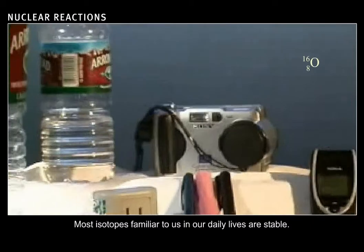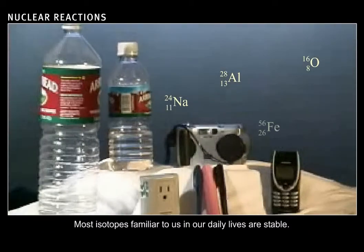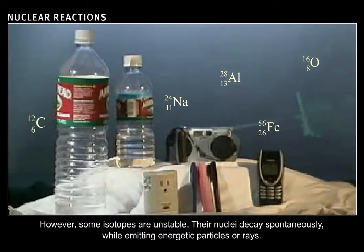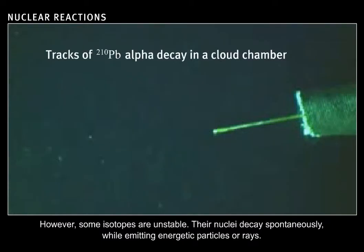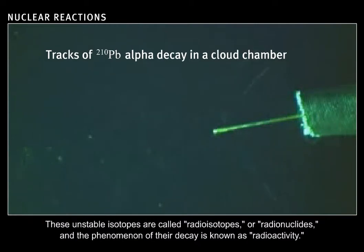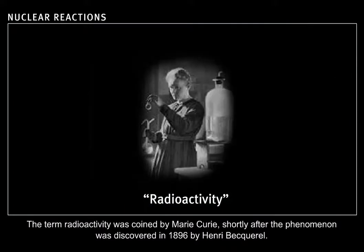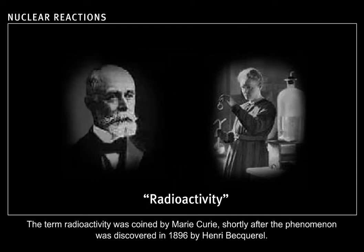Most isotopes familiar to us in our daily lives are stable. However, some isotopes are unstable. Their nuclei decay spontaneously while emitting energetic particles or rays. These unstable isotopes are called radioisotopes or radionuclides, and the phenomenon of their decay is known as radioactivity. The term radioactivity was coined by Marie Curie, shortly after the phenomenon was discovered in 1896 by Henri Becquerel.